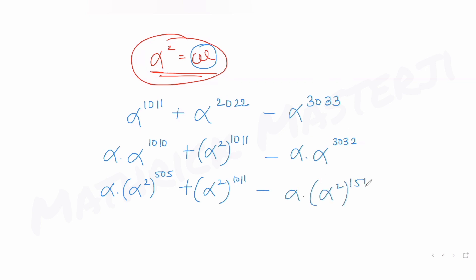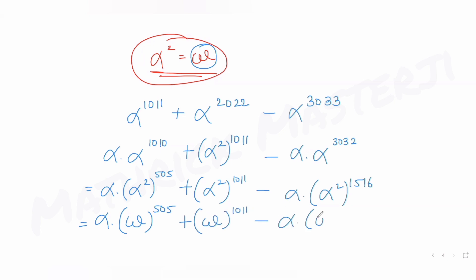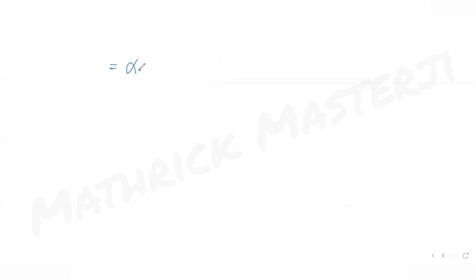Substituting α² = ω, the expression becomes: α·ω^505 + ω^1011 - α·ω^1516. Now we need to simplify the powers of omega, using the fact that ω³ = 1.